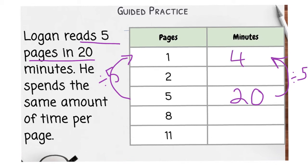So it takes him four minutes to read just one page. So then if it takes four minutes to read one page, it takes eight minutes to read two pages because one times two is two and four times two is eight. If we're trying to get to eight, we could take the two and do two times four to get eight. So eight times four would give me 32.